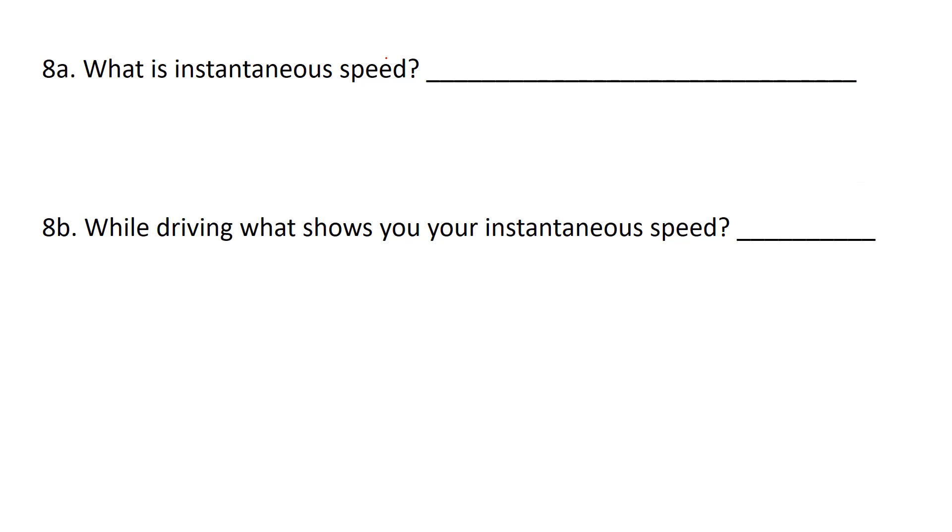If you ever hear instantaneous speed, you're talking about speed right at that moment. While you're driving, what shows you your instantaneous speed? If you're driving and you're looking at the speedometer, it's telling you what you're going at that moment. When you're stopped at the stoplight, it tells you 0.